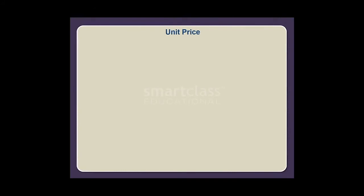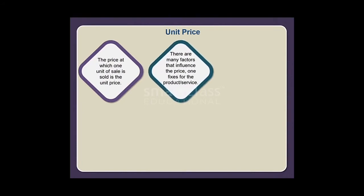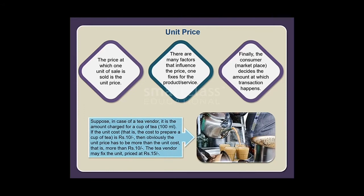Unit price is the price at which one unit of sale is sold. Many factors influence the price one fixes for a product or service, and ultimately the consumer marketplace decides the amount at which the transaction happens. For a tea vendor, the unit price is the amount charged for a cup of tea (100 ml). If the unit cost to prepare a cup of tea is rupees 10, then the unit price must be more than rupees 10 — the tea vendor may fix the unit price at rupees 15.